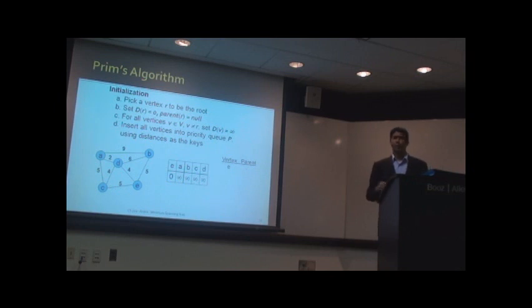We will make the edge weights artificially unique by adding a very small number, a different very small number to each of them. Then can we be sure that the minimum spanning tree will be unique?